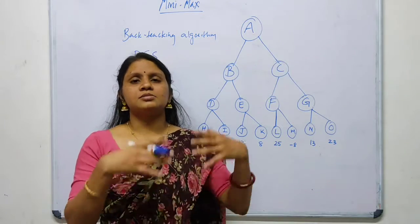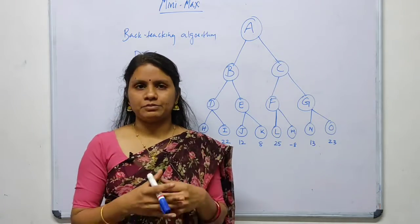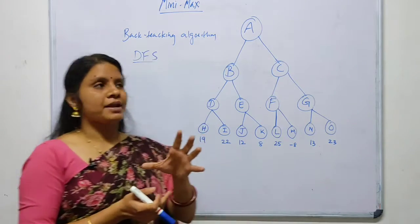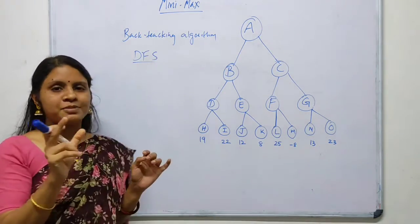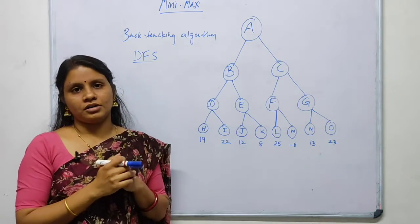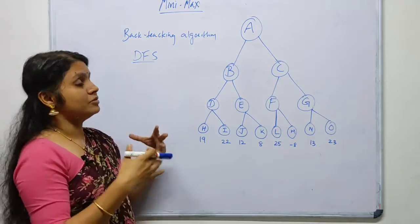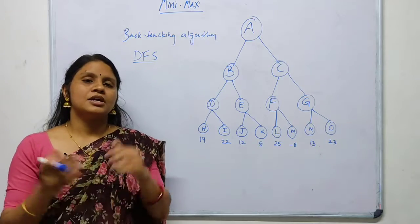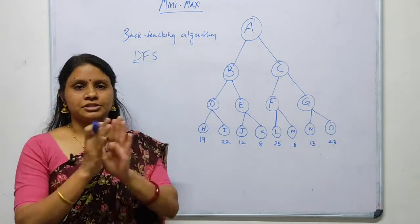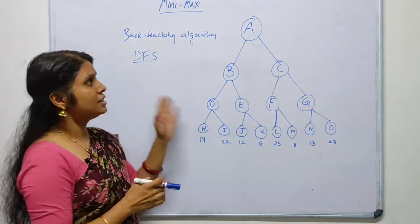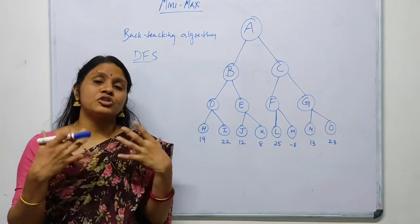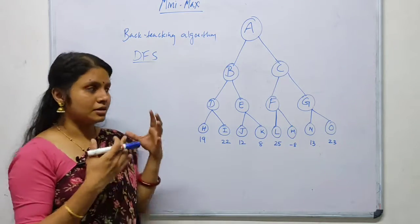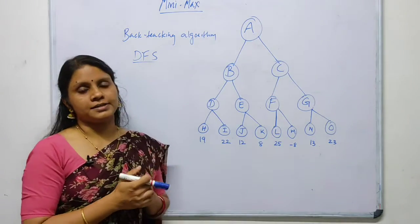In minimax there are two players: Max and Min. Both players try their best to win the game. The Max player will try to maximize their score, while the Min player will try to minimize the score of Max. They fight each other for winning the game, and the minimax algorithm computes the optimal move for each player.